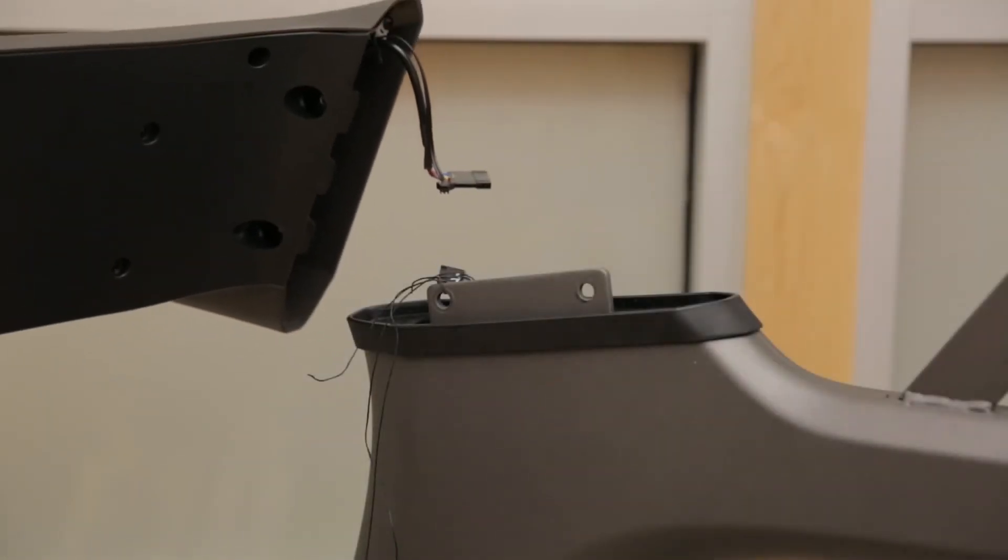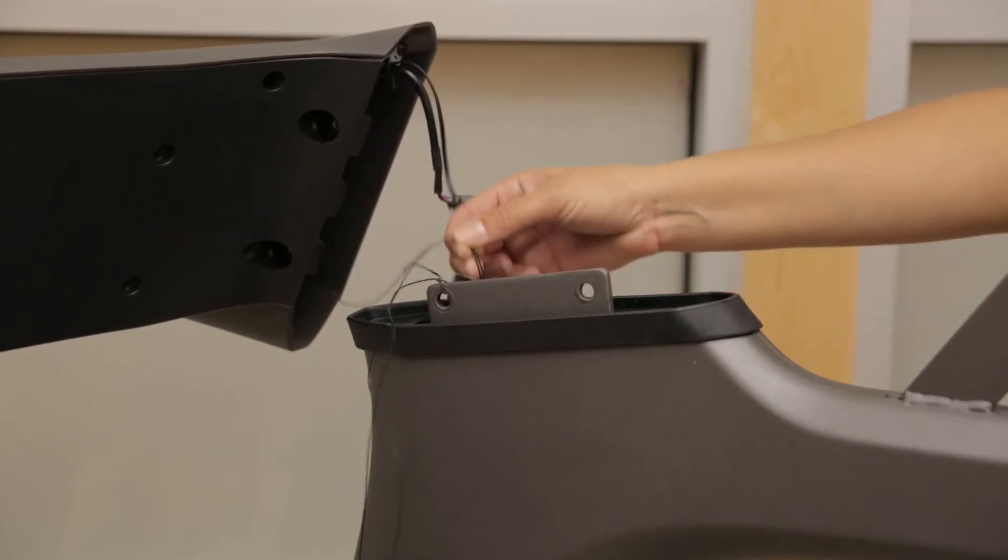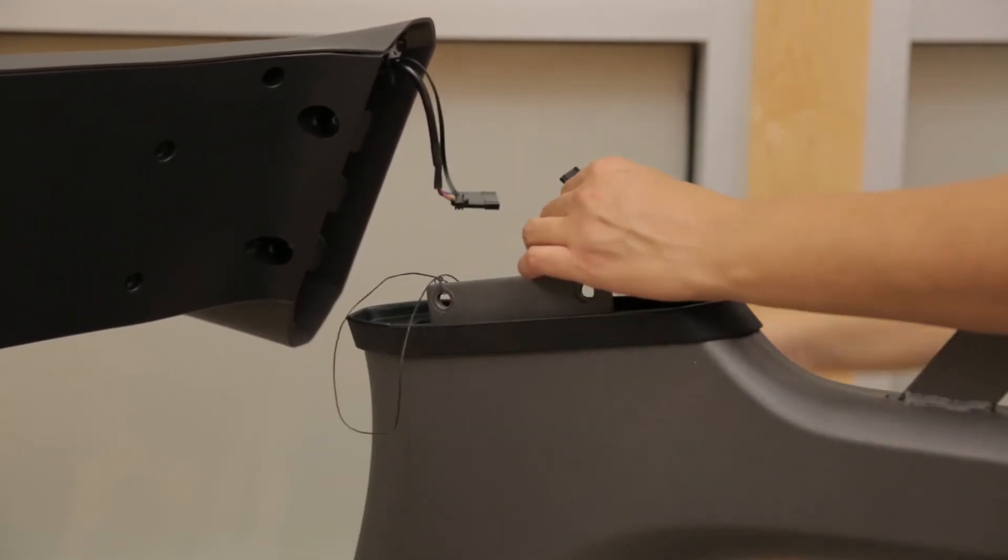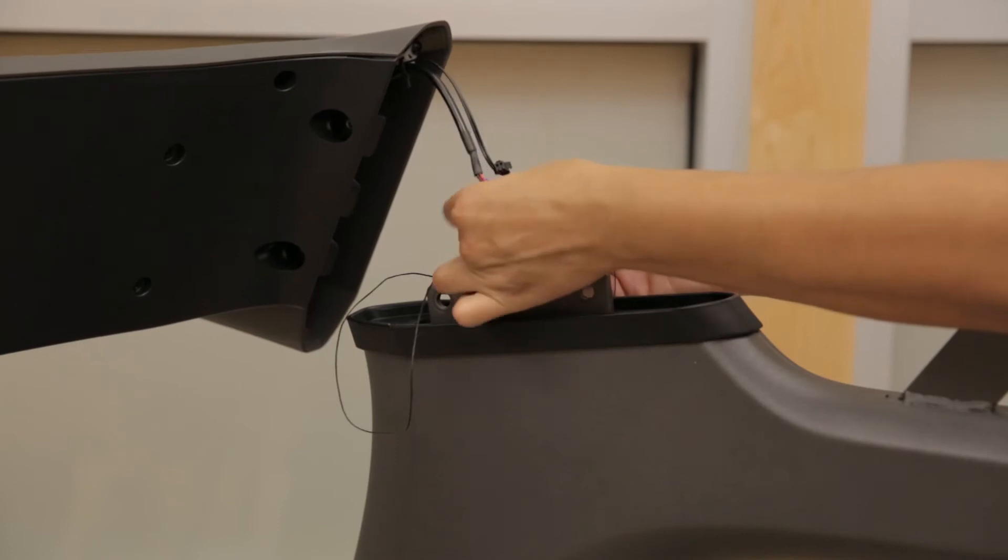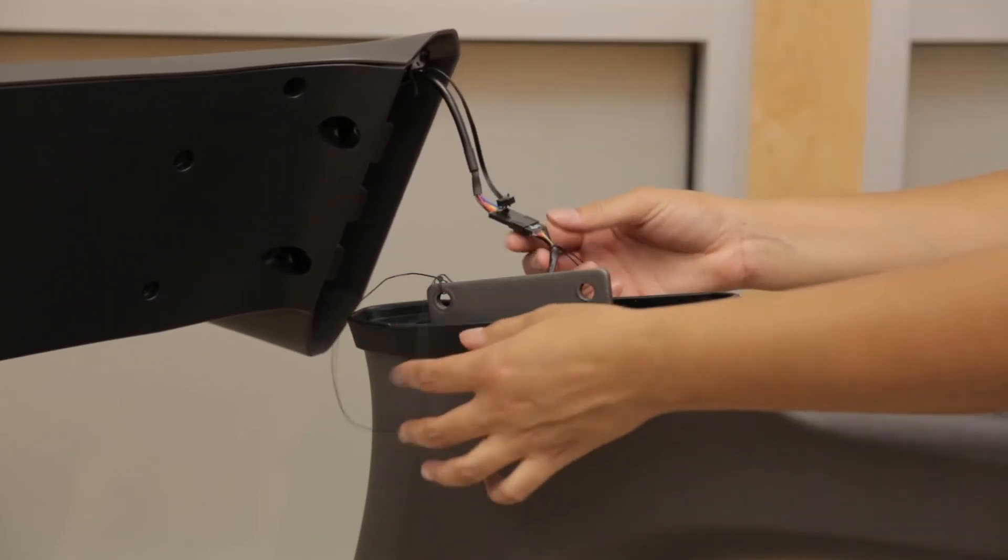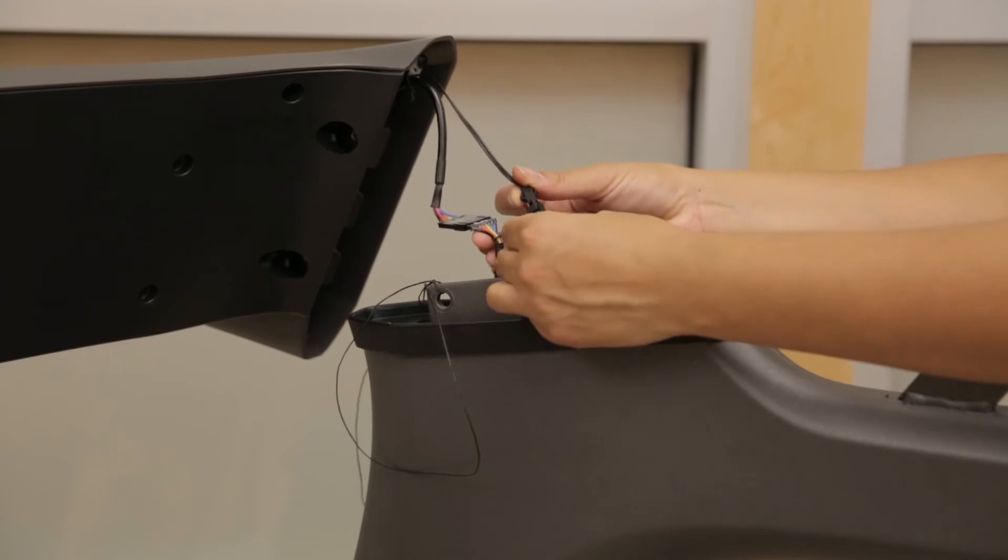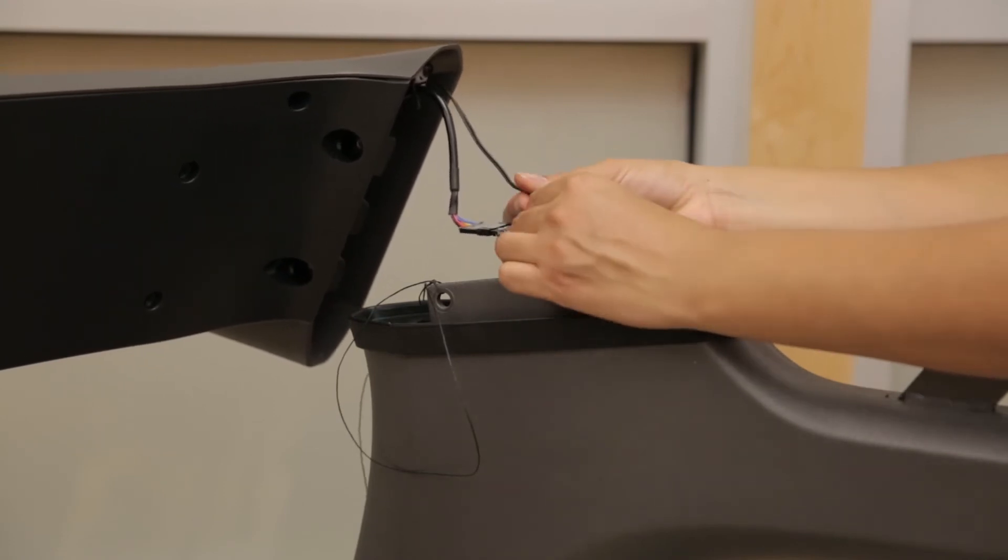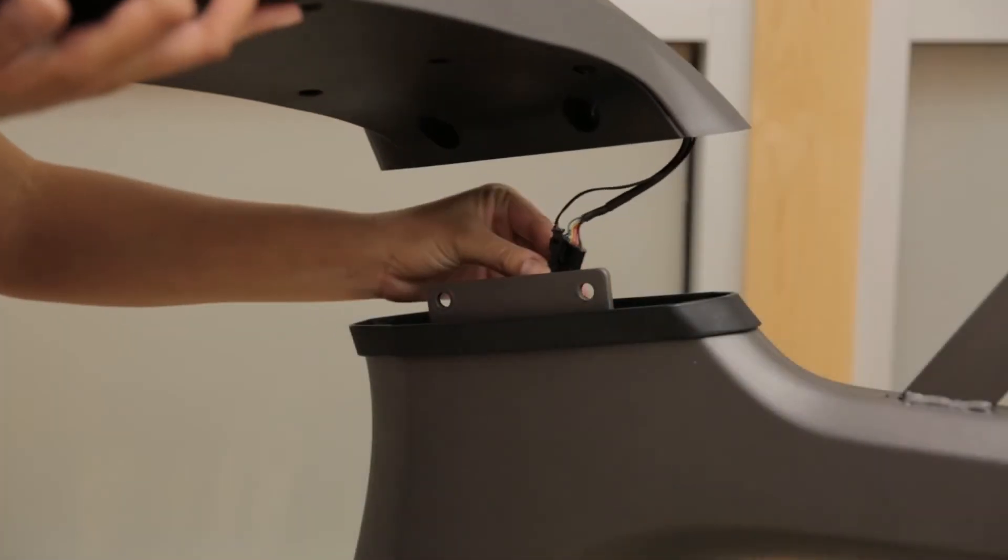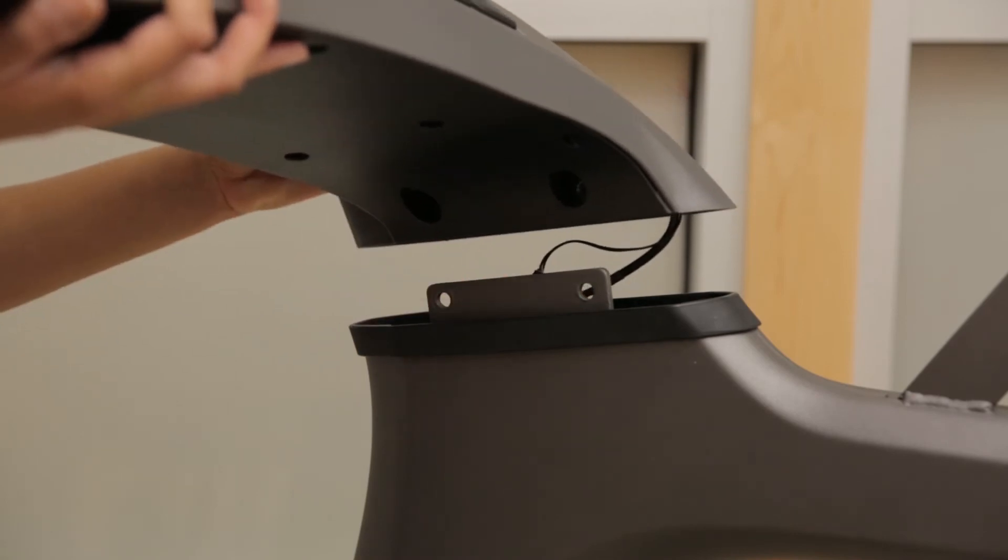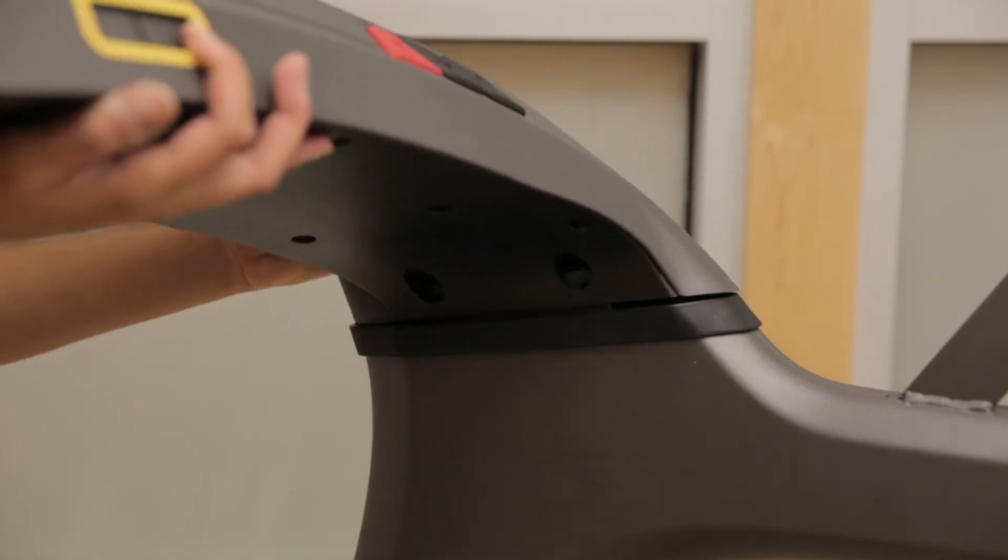Connect the cables from the mast to the cables from the console base. There should be a console cable on the right side and handlebar heart rate sensor wires on both sides. Once connected, discard the lead wire and tuck the wires into the masts.